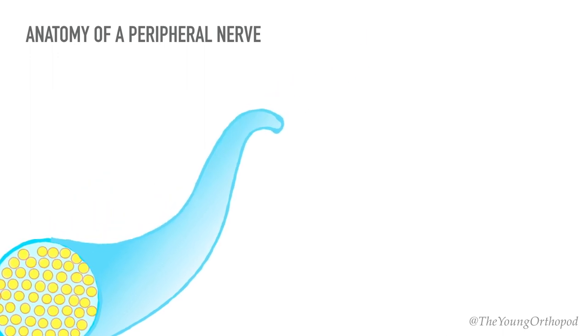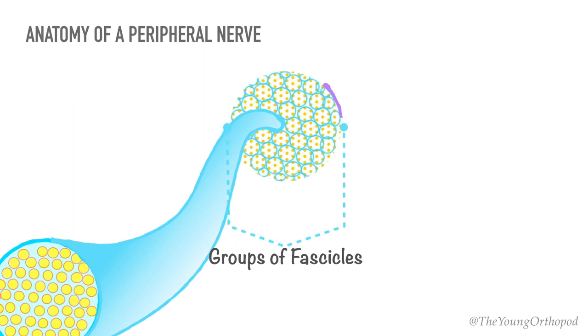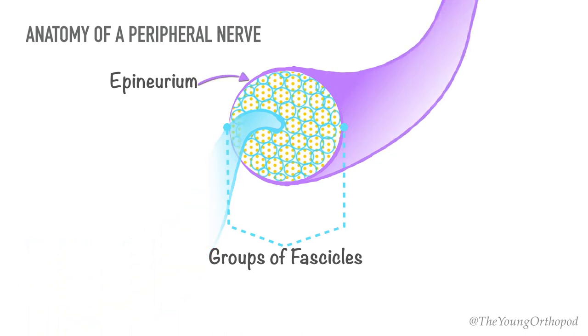The groups of fascicles that make up a nerve trunk are encased together in a dense connective tissue membrane called the epineurium.